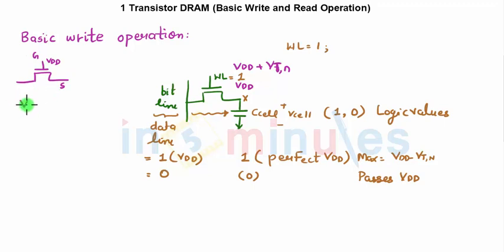We said that VGS should be greater than or equal to threshold voltage. So VG minus threshold voltage was equal to V source. So this was VS equal to VDD minus VT because my gate voltage was VDD.